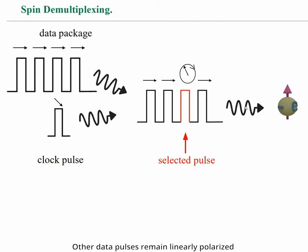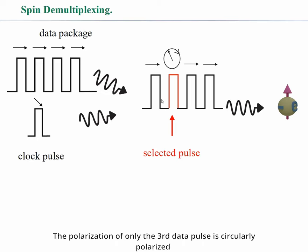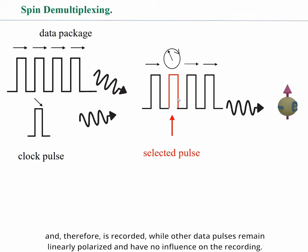Other data pulses remain linearly polarized and therefore have no influence on the recording. In the case of a longer delay of the clock pulse, the third data pulse is selected. The polarization of only the third data pulse is circularly polarized and therefore is recorded, while other data pulses remain linearly polarized and have no influence on the recording.